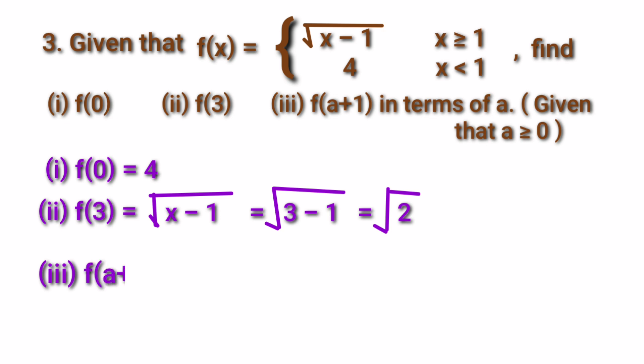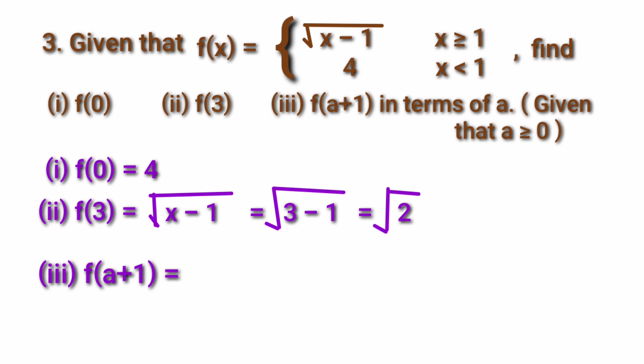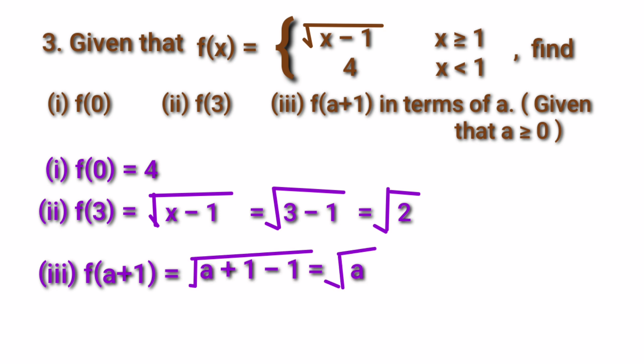For f(a+1), given a ≥ 0: substituting a = 0 gives f(1) = 1, so a+1 ≥ 1, meaning we use the formula √(x-1). Substituting x = a+1 gives √(a+1-1) = √a.